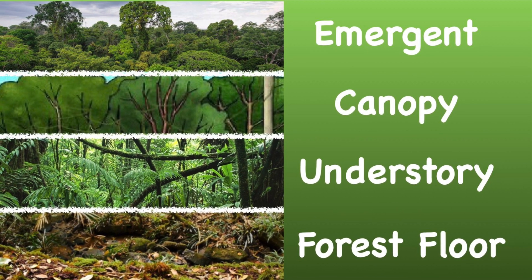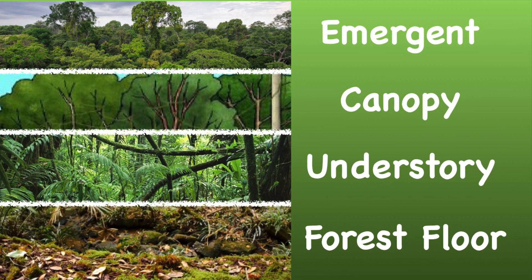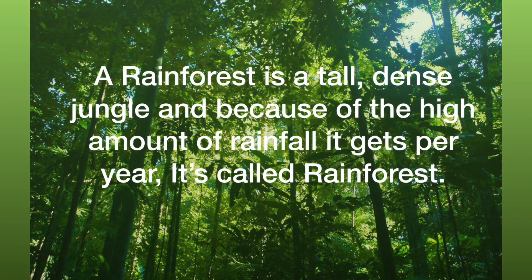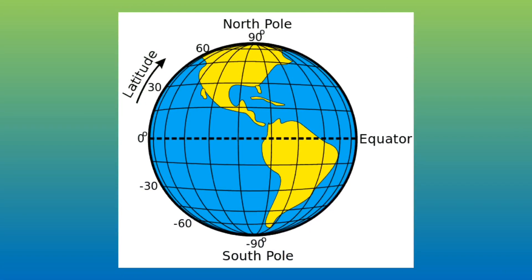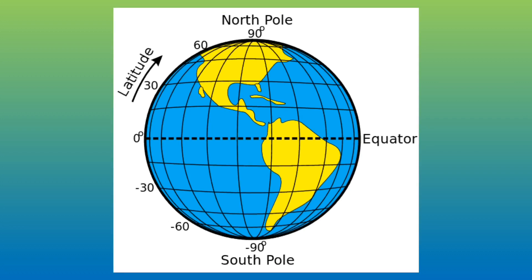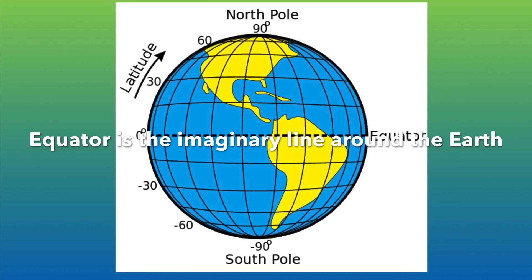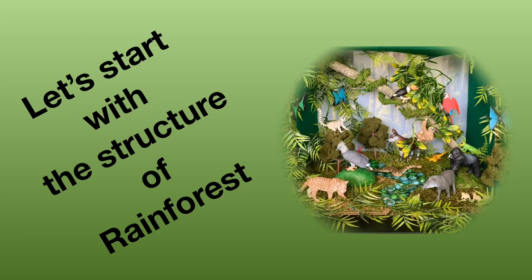Hello friends! In today's video we will learn about the structure of tropical rainforest. A rainforest is a tall and dense jungle; because of the high amount of rainfall it gets, it is called a rainforest. It is found in the tropics, on or near the equator, which is an imaginary line around the earth.